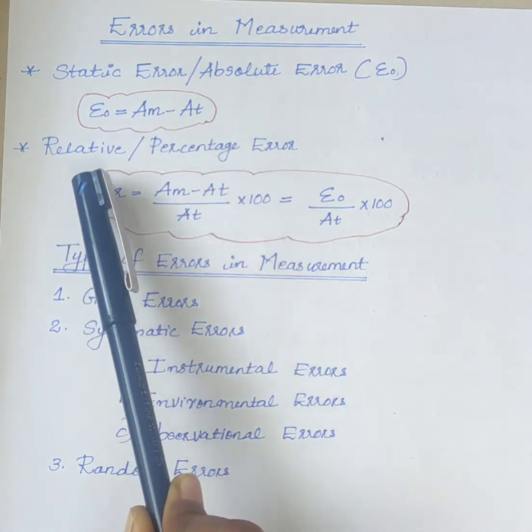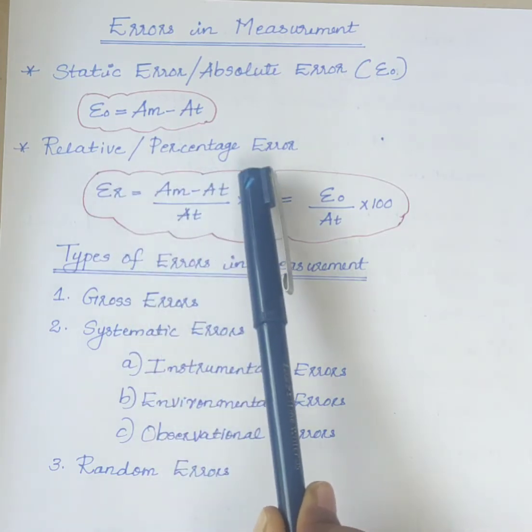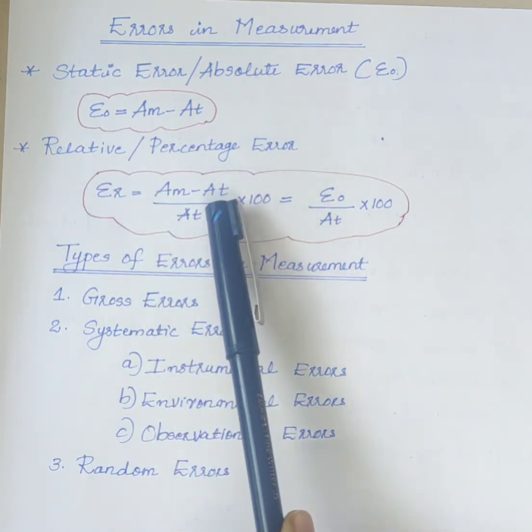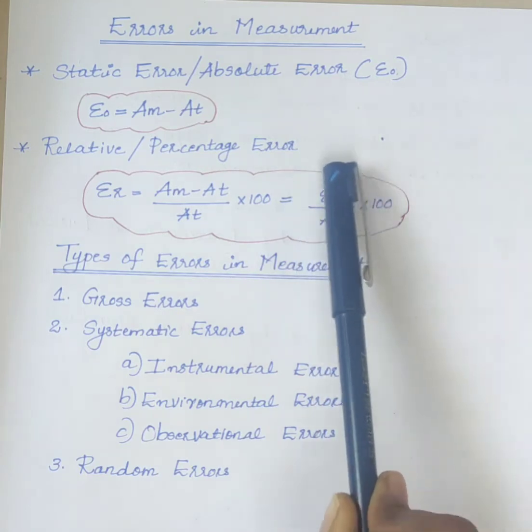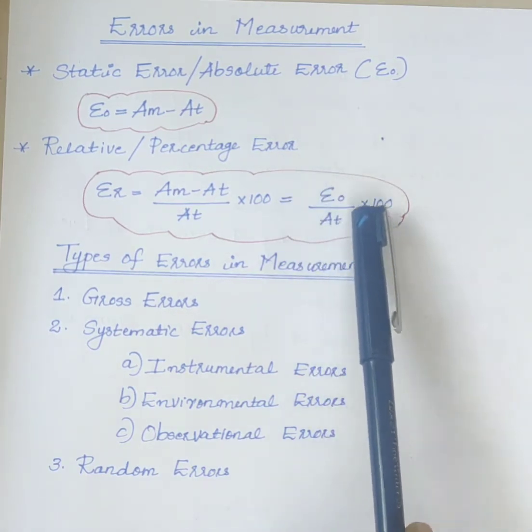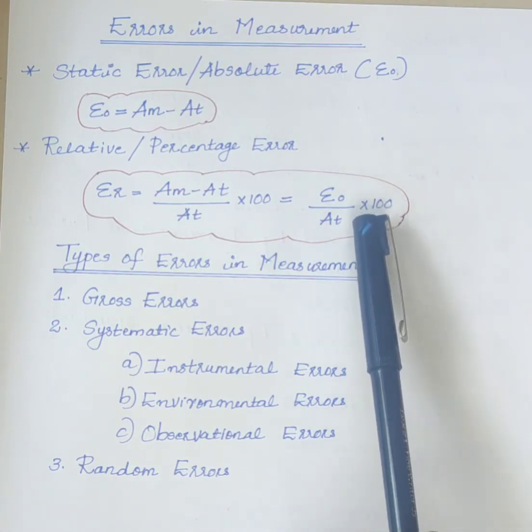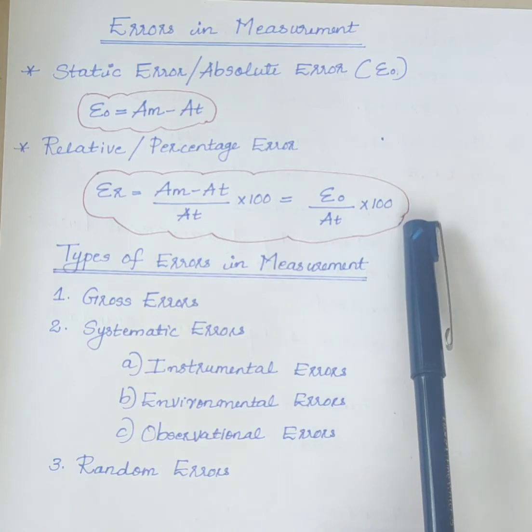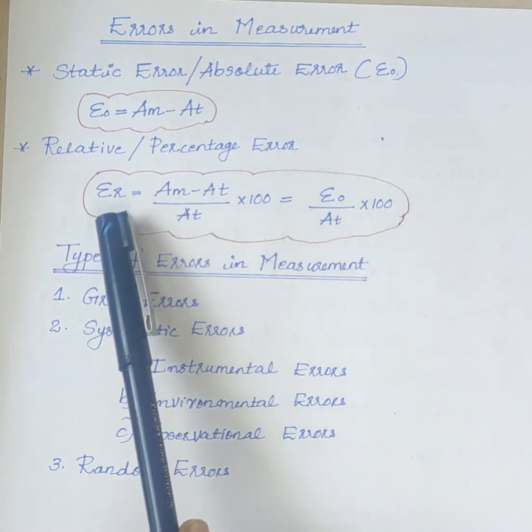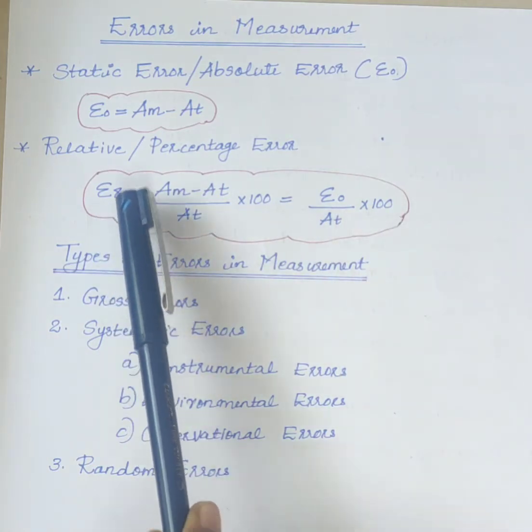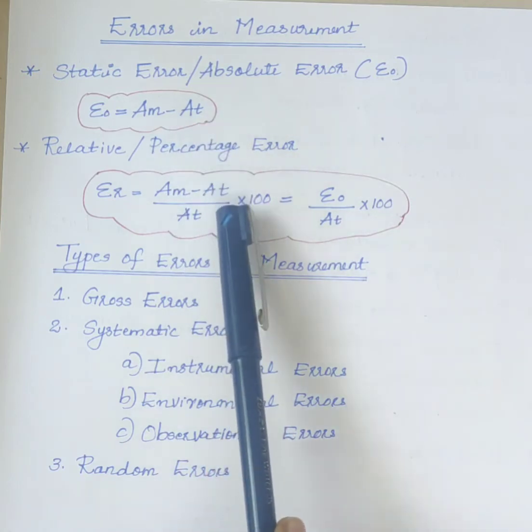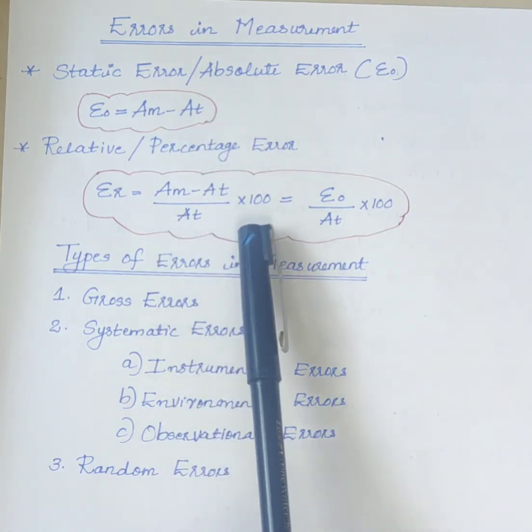Next is the relative or percentage error. It is a ratio of absolute error to the true value of the quantity to be measured. Epsilon 0 divided by AT into 100. Therefore, epsilon 0 is equal to AM minus AT divided by AT into 100.